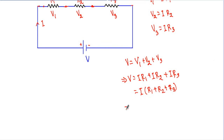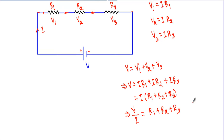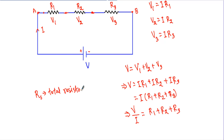If I rearrange, I get V divided by I equals R1 plus R2 plus R3. Now, considering terminal A and terminal B, the ratio V over I represents the total resistance or equivalent resistance RS between those terminals. Therefore, the total resistance RS from terminal A to terminal B equals R1 plus R2 plus R3.